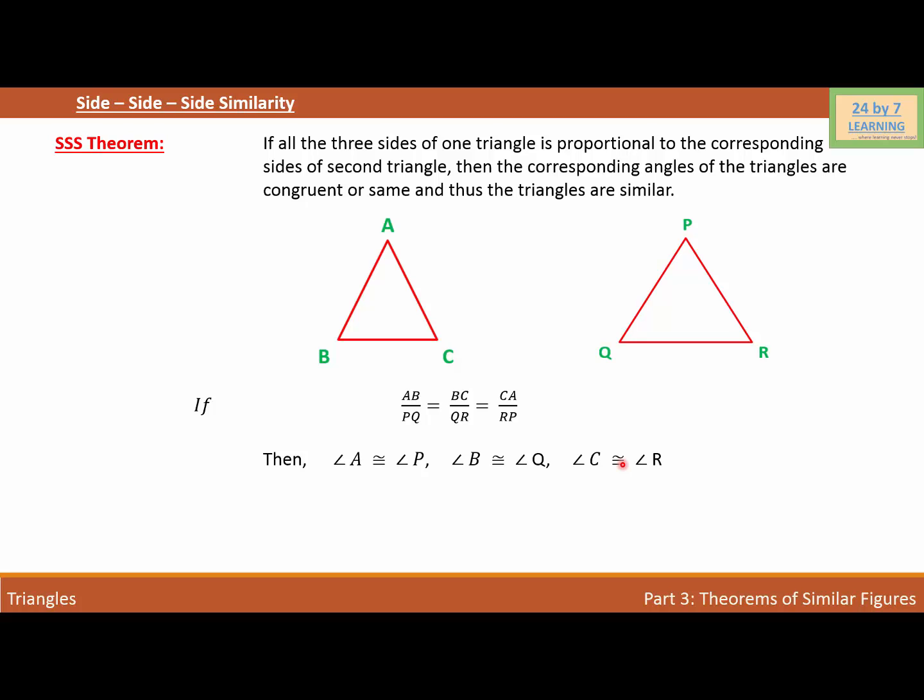And if this is the situation, then triangle ABC is similar to triangle PQR. In other words, if the ratio of the sides of two triangles are proportional, then the angles are also congruent, which means both triangles are similar.